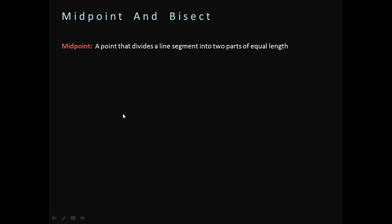This video is about midpoint and bisect, a relatively simple concept. First, we're going to look at the idea of a midpoint. A midpoint is a point that divides a line segment into two parts of equal length. Go ahead and pause the video and make sure you have that written down.